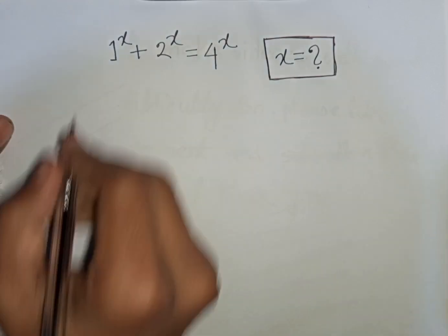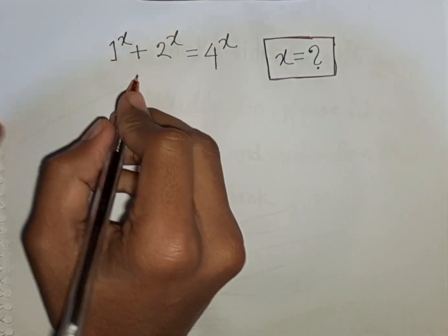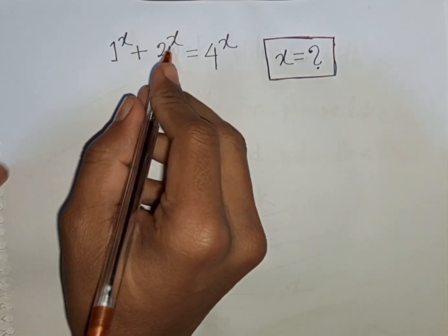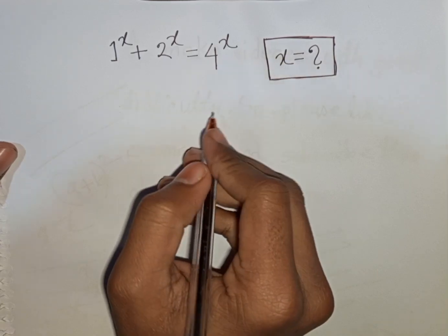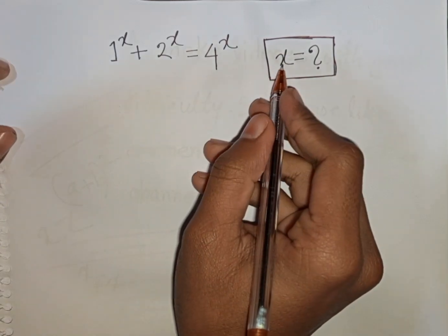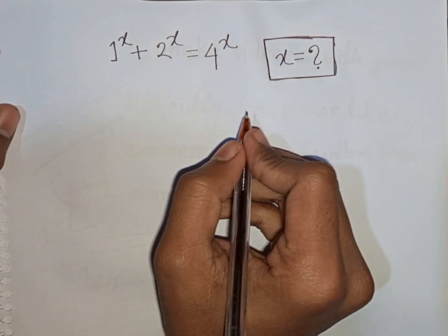How to solve 1 power x plus 2 power x is equal to 4 power x. Find the value of x.